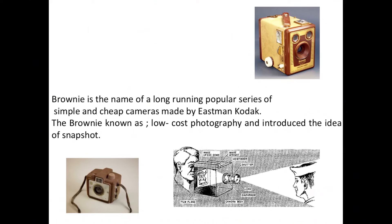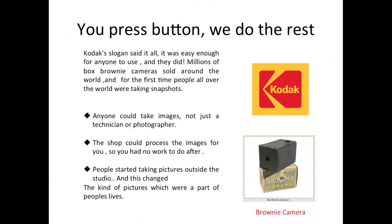The Brownie is known for low-cost photography and introduced the idea of the snapshot. The box camera works similar to a camera obscura — when light hits the object and crosses through the hole, it creates an opposite image. You press the button and Kodak does the rest, as their slogan said.